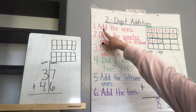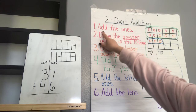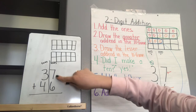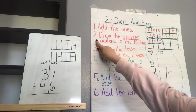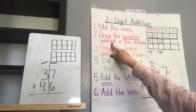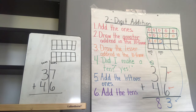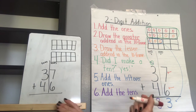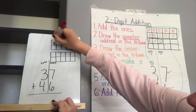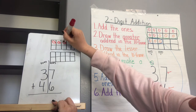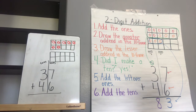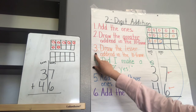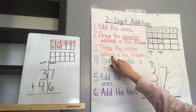The first thing we need to do is add the ones, and we're looking at the 7 and the 6. The second thing we need to do is draw the greater addend in the 10-frame. So what number is bigger — 7 or 6? You're right, 7 is bigger. So let's do that together. Count with me: 1, 2, 3, 4, 5, 6, 7. Nice job.